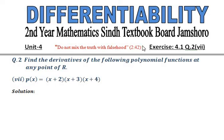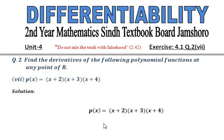Bismillahirrahmanirrahim, Assalamu Alaikum to all of you. Now Exercise 4.1, question number 2, part number 7. You can see that p(x) is equal to (x+2)(x+3)(x+4). So we have to find the derivative. The first step is that we have to multiply two brackets.